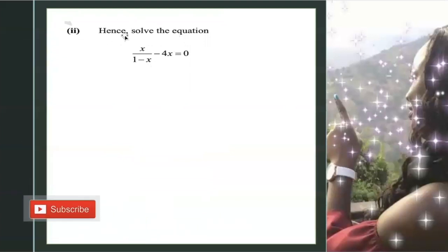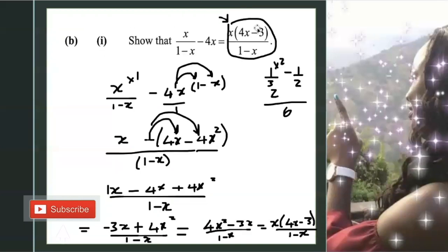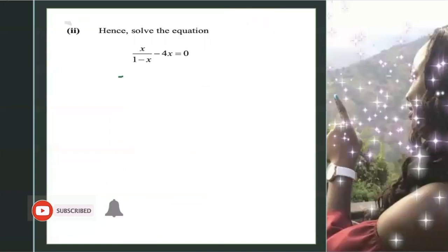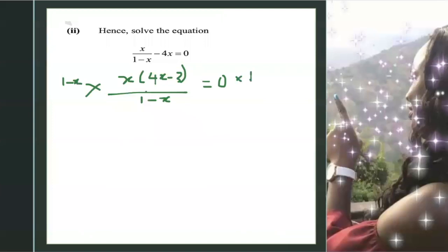Now, hence solve. When you see hence, it means we have to use the information from before. So we already proved that x/(1-x) - 4x is the same thing as this expression here. So I'm going to replace it. So this is the same as x(4x - 3) all over 1 minus x equals 0. Now first, I'm going to get rid of the denominator. So I'm going to multiply both sides by 1 minus x. This cancels. So I have x, open bracket, 4x minus 3, and then 0 times 1 minus x, that will be 0.